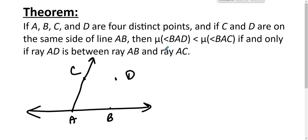Then the measure of angle BAD is less than the measure of angle BAC if and only if AD is between AB and AC. That's actually not terribly difficult to show. It falls right out from protractor postulate.